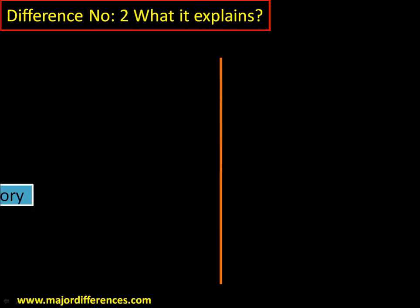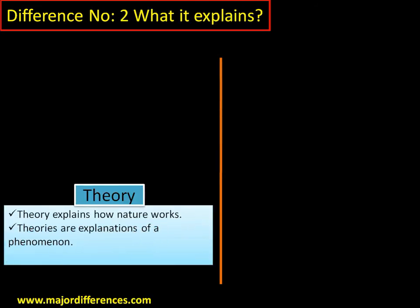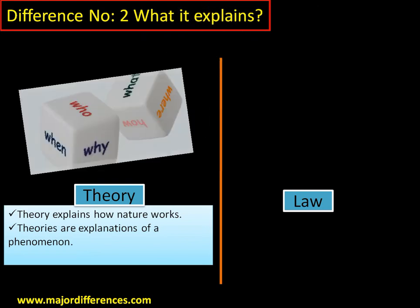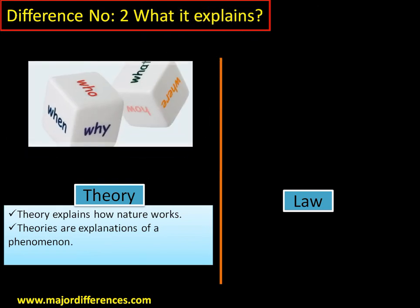Difference number two — what it explains. A theory explains how nature works; it is an explanation of a phenomenon. A theory answers questions like why, how, what, when, etc. Take the example of the theory of evolution — it actually explains how life originated on this planet, what the reason was, and how it originated. Darwin proposed natural selection, so it answers questions like how, why, and when.